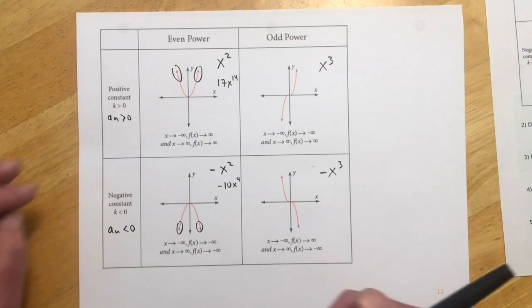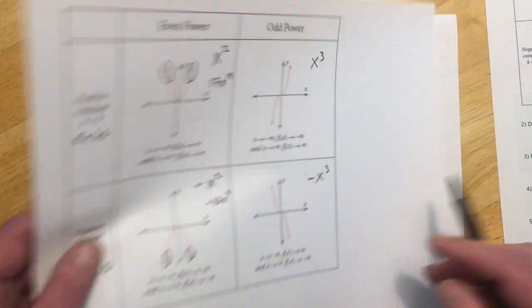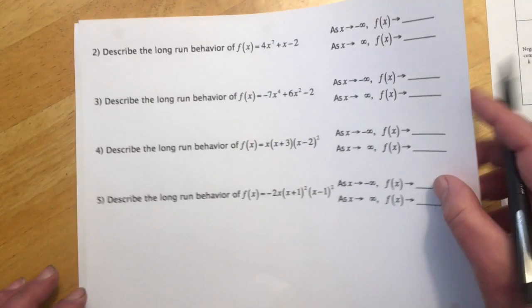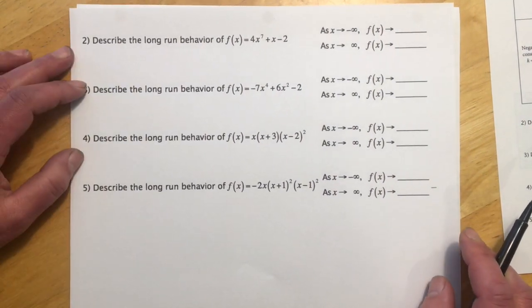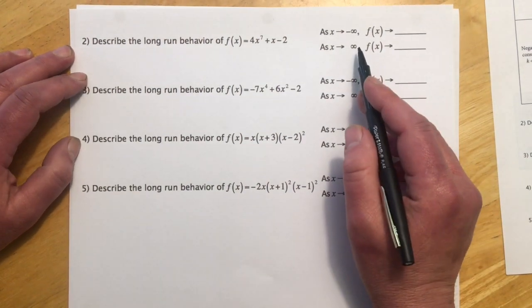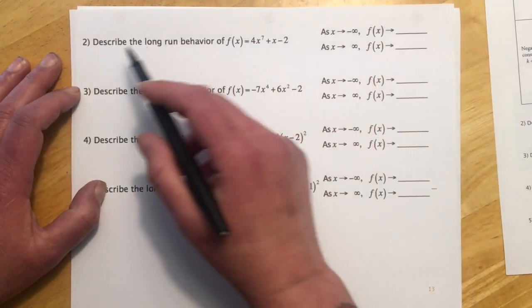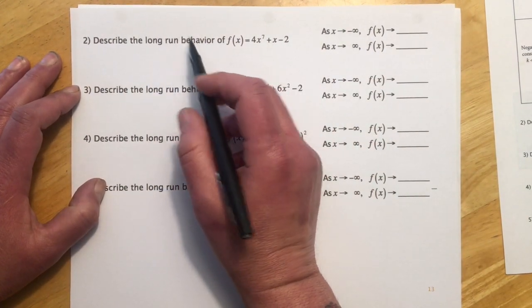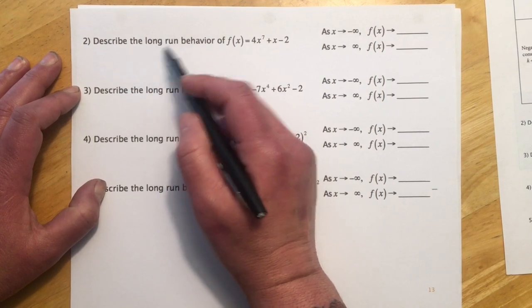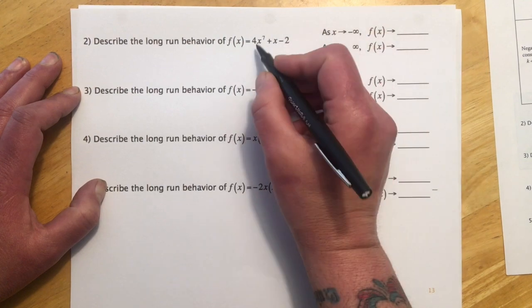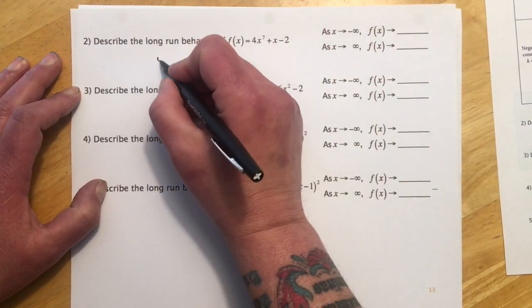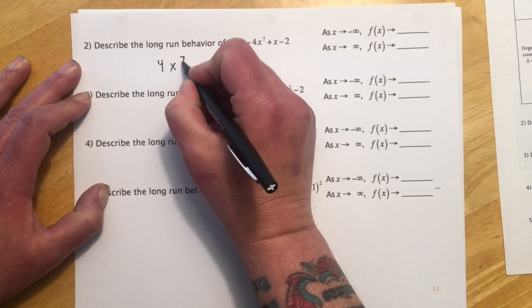And so then they'll ask some questions with that, with this kind of confusing notation. But let's see if we can kind of work through these and make it make sense. So, number two is describe the long run behavior or end behavior, I've seen it both in different books, of this function.